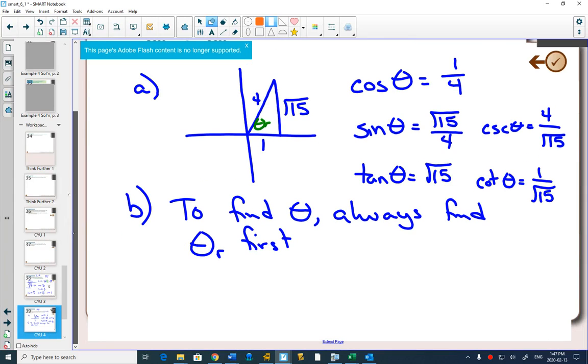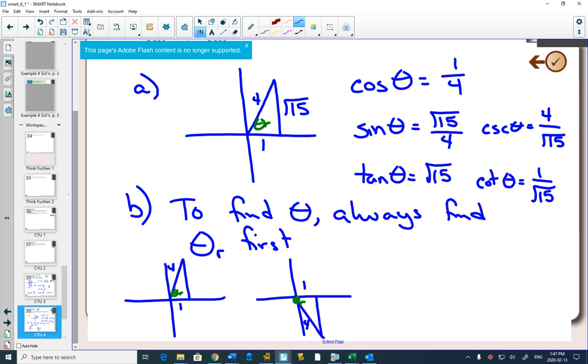And what you said before is true, that if cos of theta is 1 quarter, we could have it here in quadrant 1 with 1 and 4, and our reference angle here. But we could also have drawn it with the reference angle in quadrant 4, and still had 1 and 4 there. Correct?